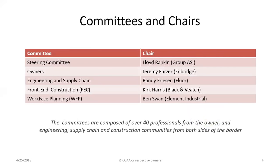The committee is made up of Lloyd Rankin, Jeremy Furzer representing the owners, Randy Friesen representing engineering and supply chain, Kirk Harris from Black & Veatch focused on front-end construction and path of construction, and Ben Swan focused on work phase planning. In addition, we've got over 40 professionals from the owner and contractor communities covering engineering, supply chain, and construction, from both Canada and the United States.